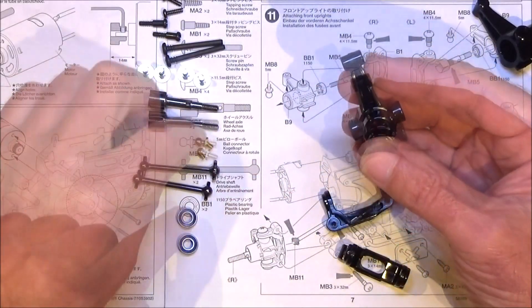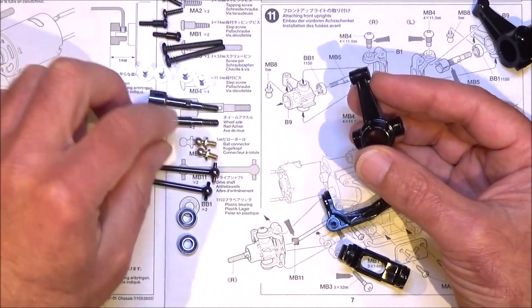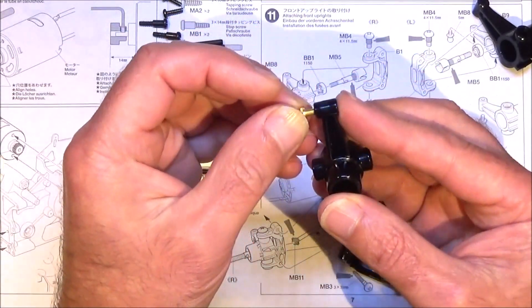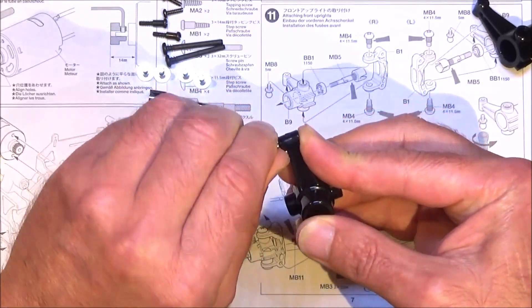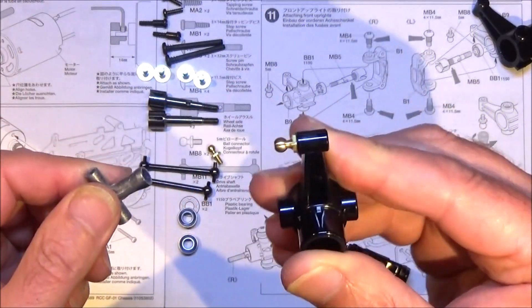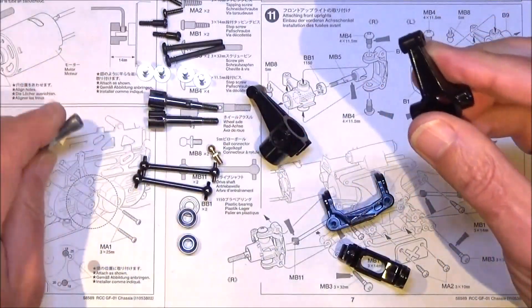What we need to do first is put the 5mm ball joints into the bottom. I've also got all my hardware lined up on the left there matched up to the diagrams. So let's get this ball joint in there and the same but the opposite on the other side.